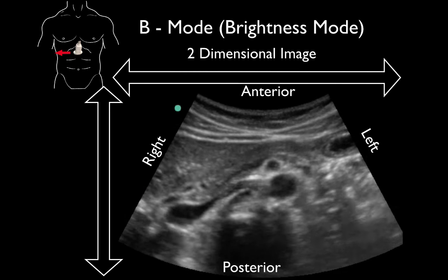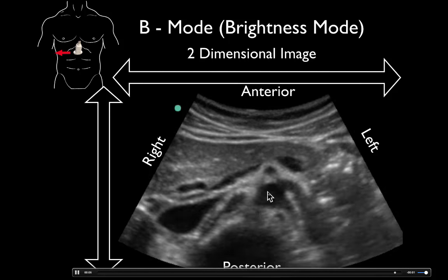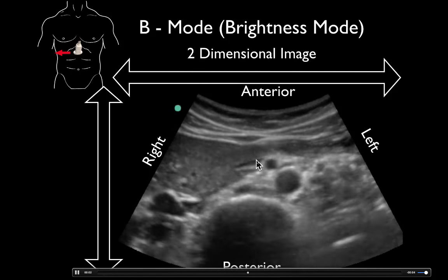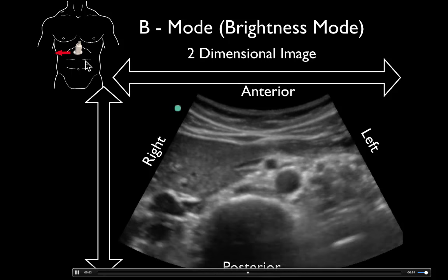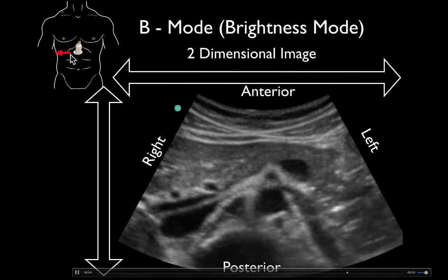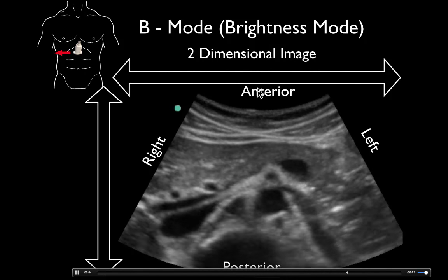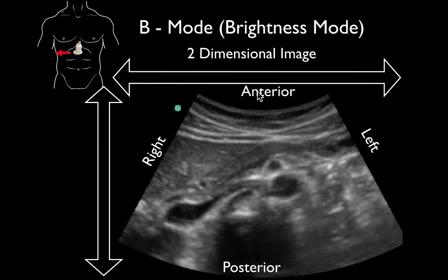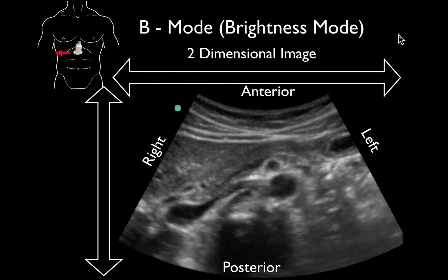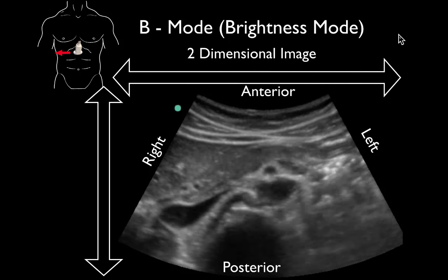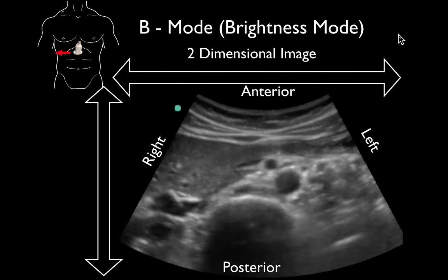Let's go ahead and see that in live video. We can see those structures again: the vertebrae deep, our aorta, the SMA coming off of that, the splenic vein coming across to the portal system, the IVC, and the big liver over here. Once again, our probe marker is toward the patient's right — that's our x-axis coming across — and the patient's left is directly opposite. Anterior is where the probe is placed, and where we're aiming is posterior. So we get our 2D image, which is a grayscale of different brightnesses of gray, and that helps us appreciate what we're seeing.